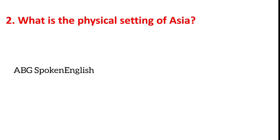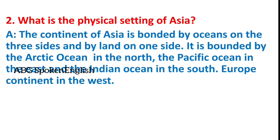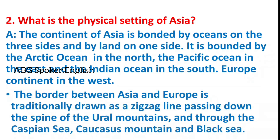What are the physical settings of Asia? The continent of Asia is bounded by oceans on three sides and by land on one side. It is bounded by the Arctic Ocean in the north, the Pacific Ocean in the east, the Indian Ocean in the south, and the Europe continent in the west. The border between Asia and Europe is traditionally drawn as a zigzag line passing down the spine of the Ural Mountains and through the Caspian Sea, the Caucasus Mountains, and the Black Sea.